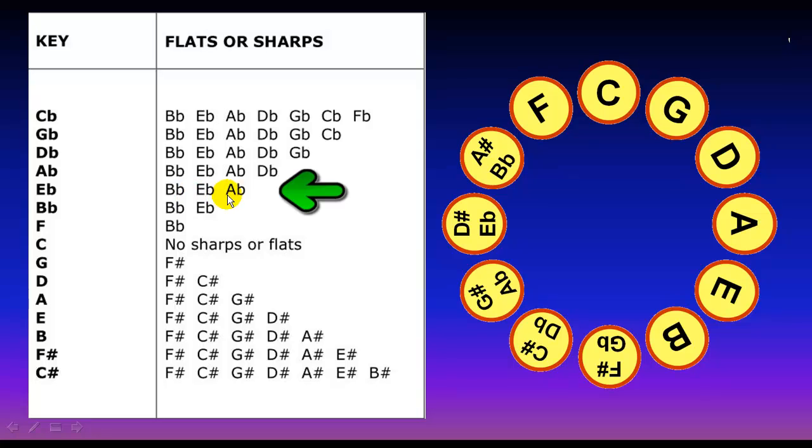E flat has three flats. So you add the A flat. So it is B flat, E flat, A flat.